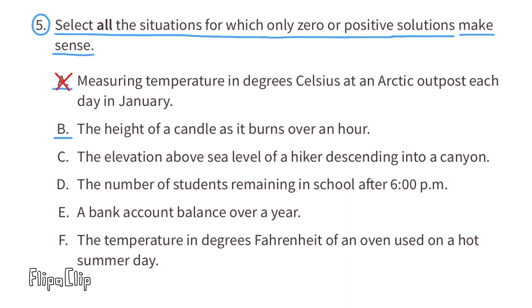Let's look at B. The height of a candle as it burns over an hour. Well, it doesn't make sense to think that a candle could burn anything below 0. Once the candle completely melts or burns out, the smallest it could get would be 0. The solutions for situation B could be 0 or positive.